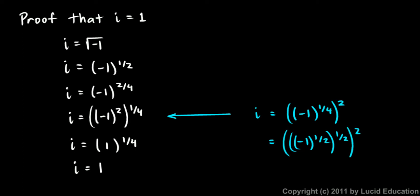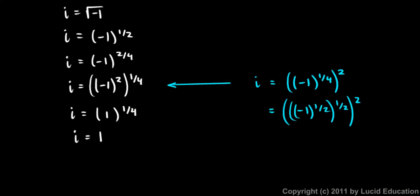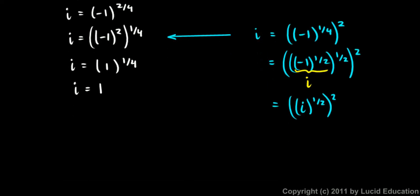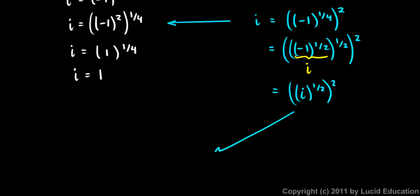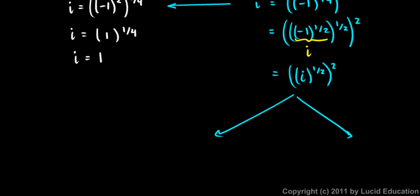Now how do I think about this? Look at this: negative 1 to the 1/2 is i — that's the square root of negative 1. So this is really i to the 1/2, squared. So what I'm doing here is looking at the square root of i squared. And there are two ways to think about that, so I'm going to follow two branches of reasoning here.